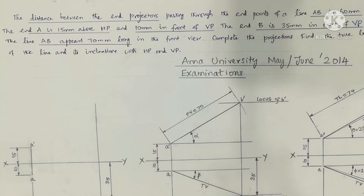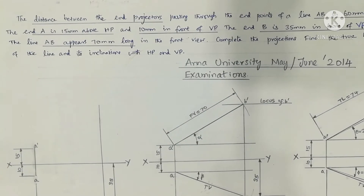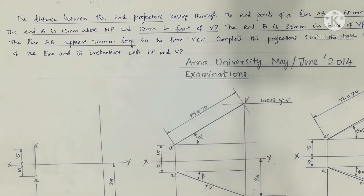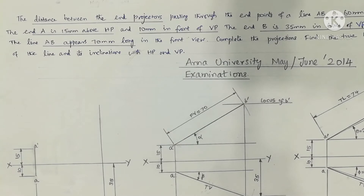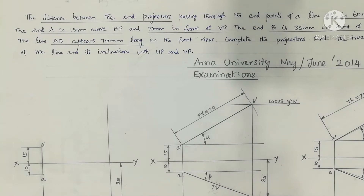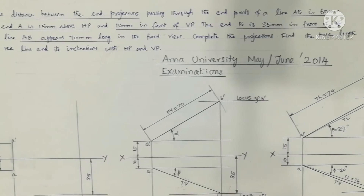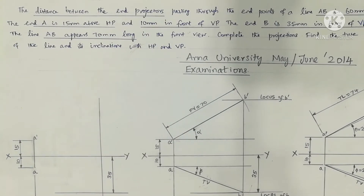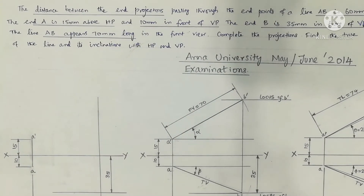Welcome. This is a problem on projection of straight lines. The distance between the end projectors passing through the end points of line AB is 60mm. End A is 15mm above HP and 10mm in front of VP. End B is 35mm in front of VP. The line AB appears 70mm long in the front view. We need to complete the projections and find the true length of the line and inclinations with HP and VP.